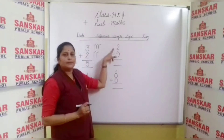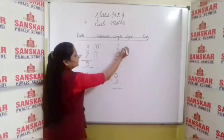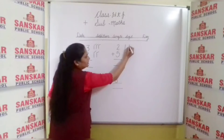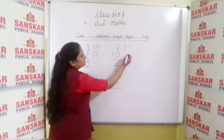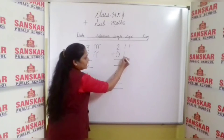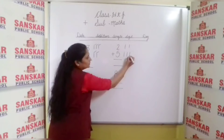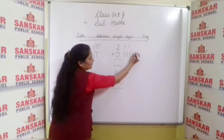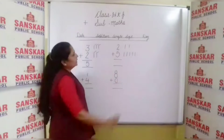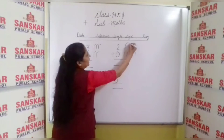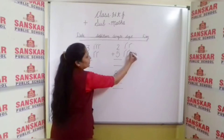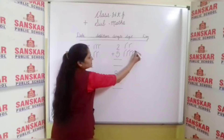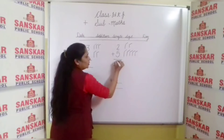Now look at here. Next is number five. Now count it: one, two, three, four, and five. Now count all: one, two, three, four, five, six, and seven. So we have to write number seven.